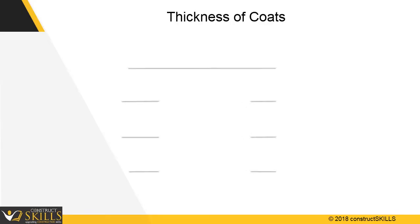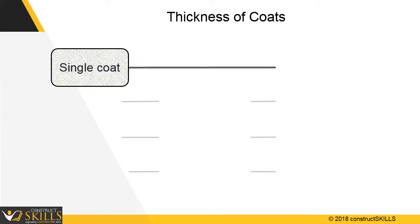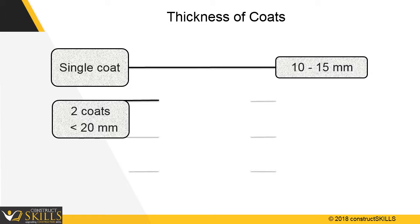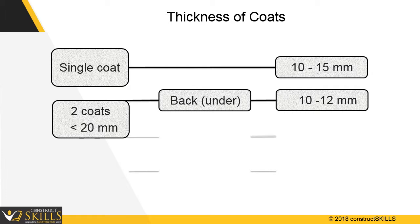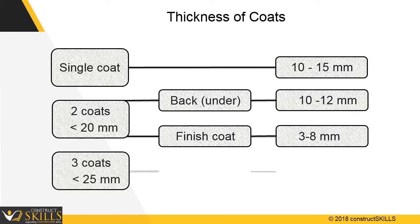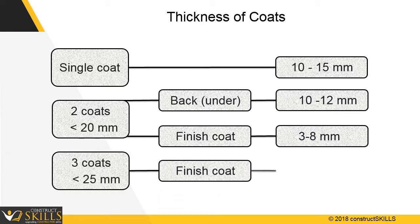The thickness of plaster in a single coat will be 10 to 15 millimeters. The two-coat plaster will have a total thickness of less than 20 millimeters, comprising a 10 to 12 millimeter thick back coat and a 3 to 8 millimeter thick finished coat. For three-coat plaster, the total thickness will be less than 25 millimeters, with the finished coat being 3 to 5 millimeters thick.